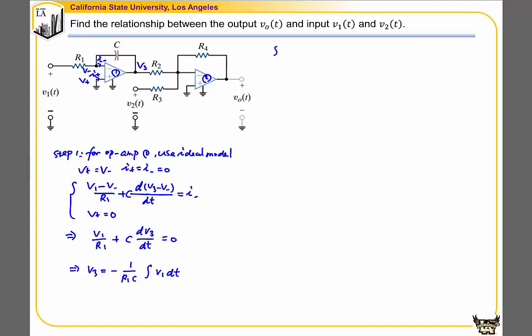Step 2: for the second op-amp, we again use the ideal model. Whenever we use the ideal model, it implies V+ equals V-, and I+ equals I- equals zero. Then we can write the equations.